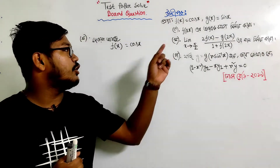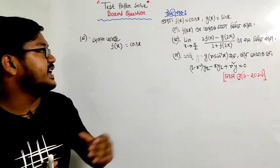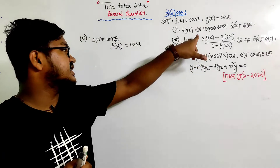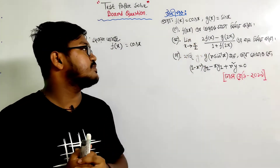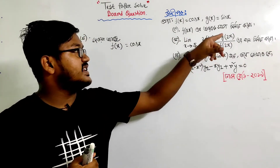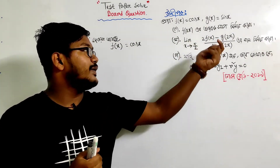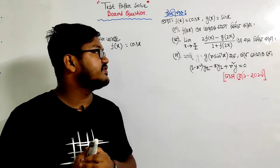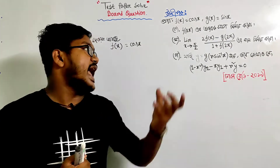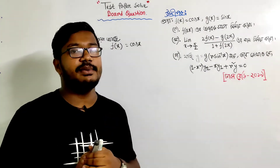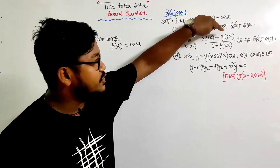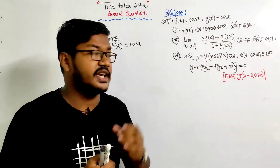So let's look at the question. We will evaluate the limit as x tends to pi by 2 of f of x minus g(2x) divided by 1 plus f(2x).